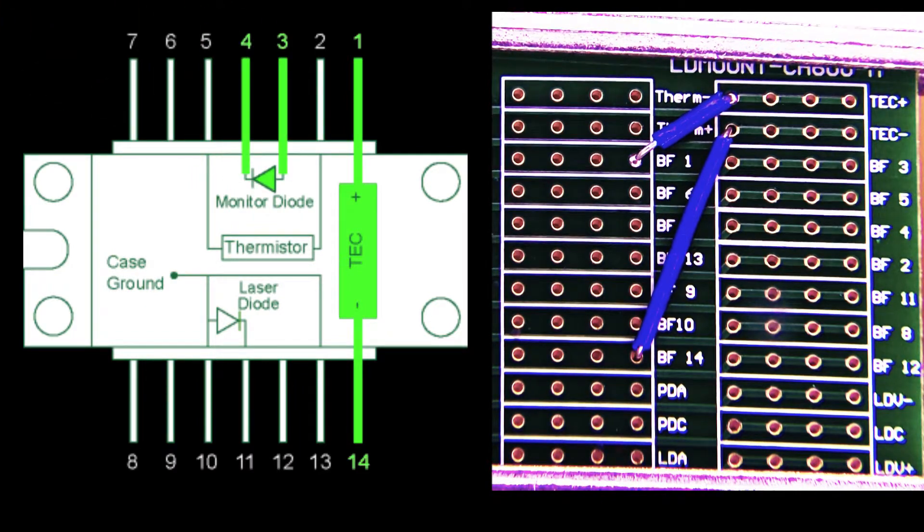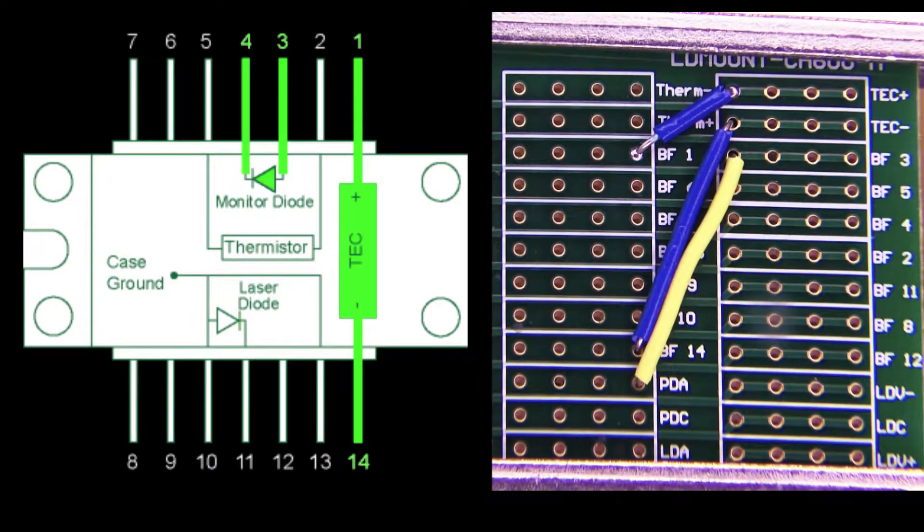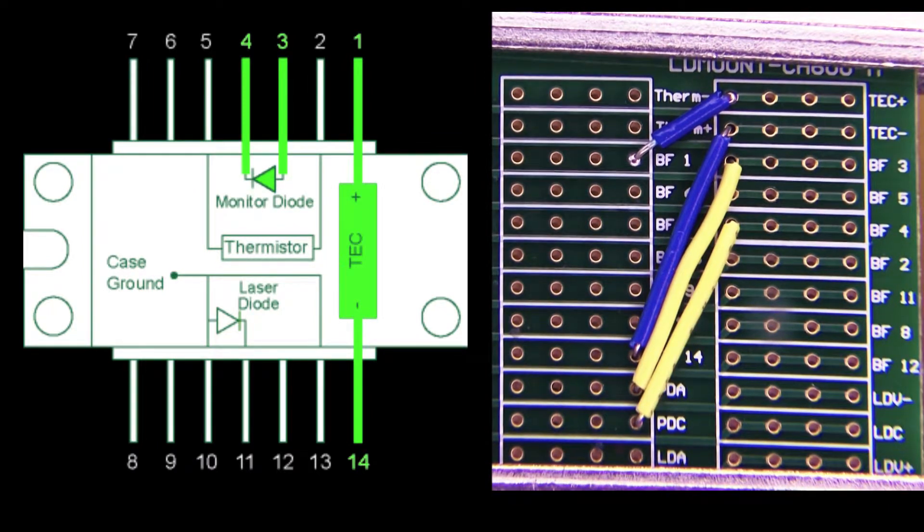Next, the monitor photodiode connected between pins 3 and 4 of the butterfly package requires card connections from its anode to butterfly pin 3. Correspondingly, its cathode must make a connection on the card to butterfly pin 4.